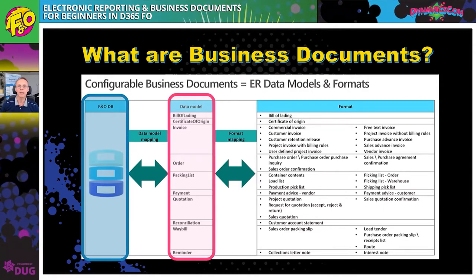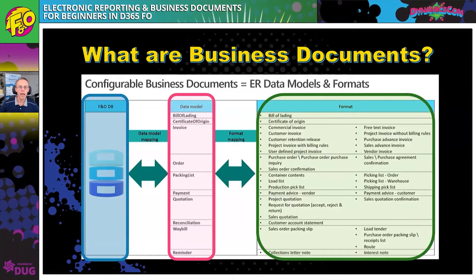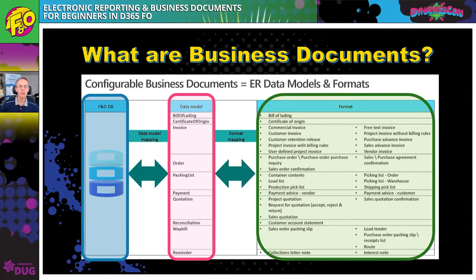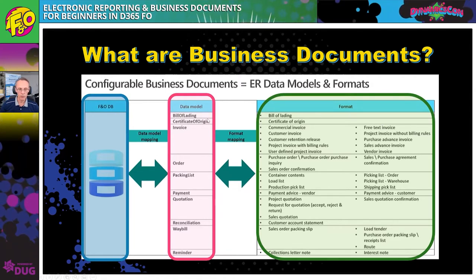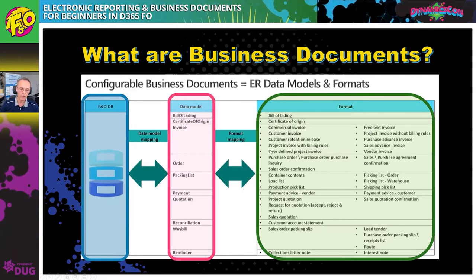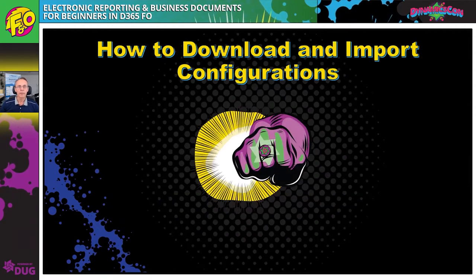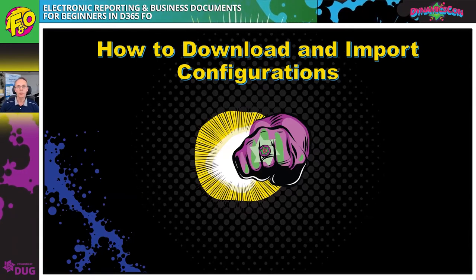In the mapping we pick which data from the data sources we're going to use, and we're not limited only to fields in data tables — we can also use aggregations and different data structures. Formats define the documents: individual documents including templates in Excel or Word which consume the data available in the data model. For example, the invoice data model is a superset of all data available for invoices, and individual invoice formats just take subsets of this data — one invoice data model but several different invoice formats.